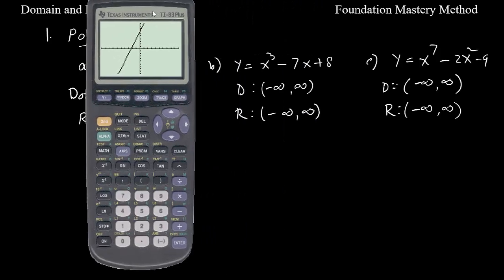Now I have to type my function which is x to the third minus 7x plus 8, and then graph it again in the standard window. You can easily see that this graph goes all the way down, goes all the way up, and also this way. So the domain and range will be the same. This way you can verify when you have the highest degree of the polynomial as an odd number, then your domain and range will be all real numbers.